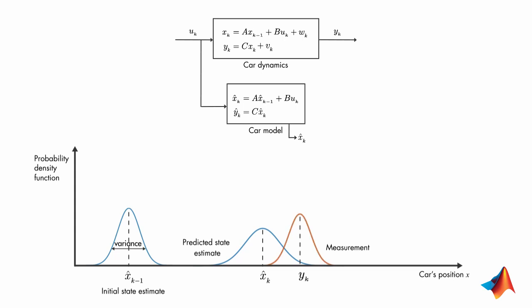It turns out that the optimal way to estimate the car's position is by combining these two pieces of information. And this is done by multiplying these two probability functions together.